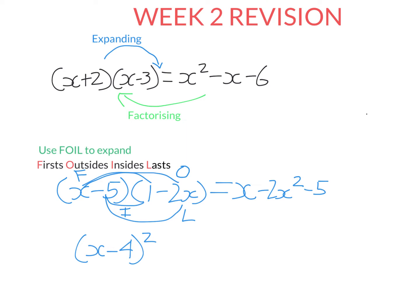And then L is the thing last in each bracket — negative five times negative two X gives positive 10X. So we just need to simplify because we have two like terms. Remember, X squared and X are not like terms because this has two X's and this one doesn't. But X and 10X are like terms. So we leave the negative two X squared alone — it has no like terms. X plus 10X is 11X, and we leave the negative five alone because it also doesn't have any like terms. So this is our final answer.